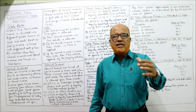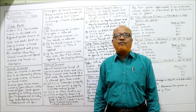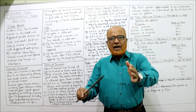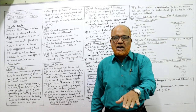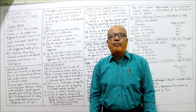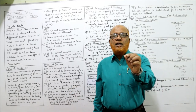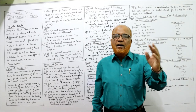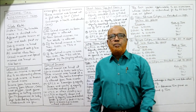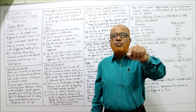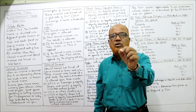Whenever casual income arises, the issuing authority has to deduct tax at source. For example, if you won a lottery prize of ₹1 lakh, the full ₹1 lakh will not be issued — 30% tax is deducted and only ₹70,000 will be given to you as the net amount after deducting TDS. That is the provision of the Income Tax Act. However, if the casual income is up to ₹10,000, no TDS is made — the complete amount is given to the winner. If casual income is more than ₹10,000, TDS must be made by the issuing authority.